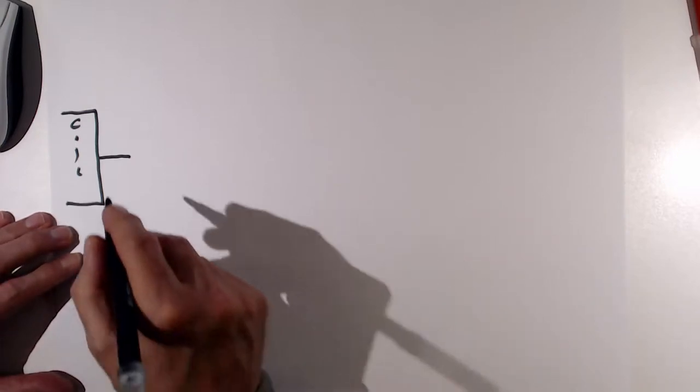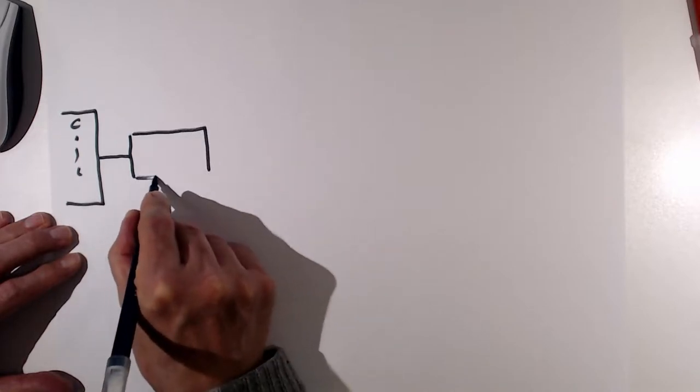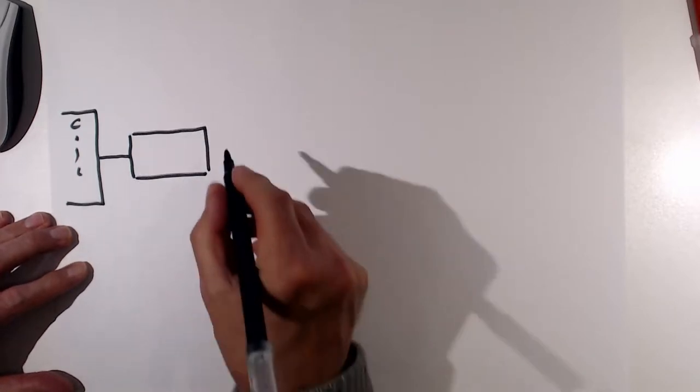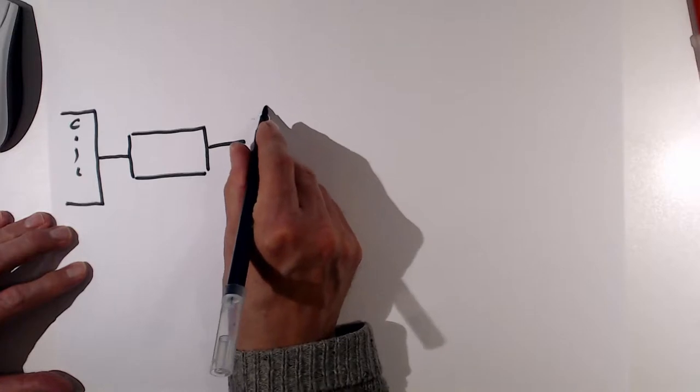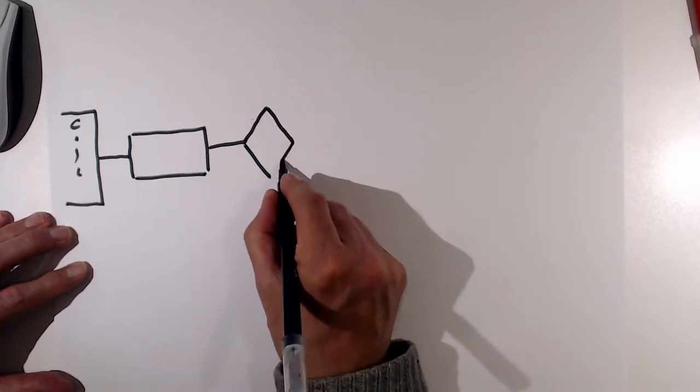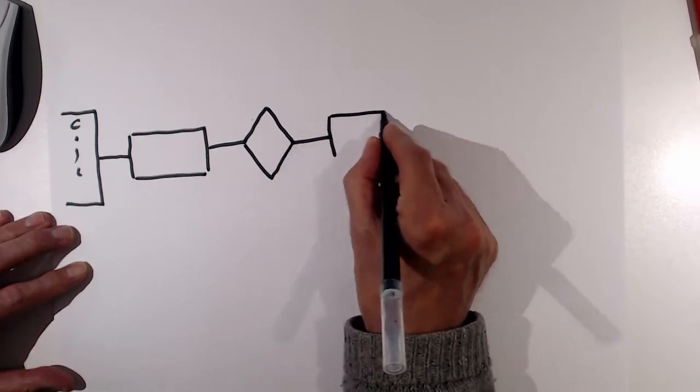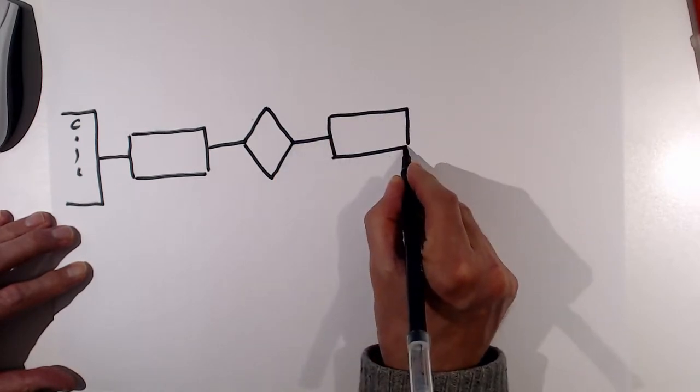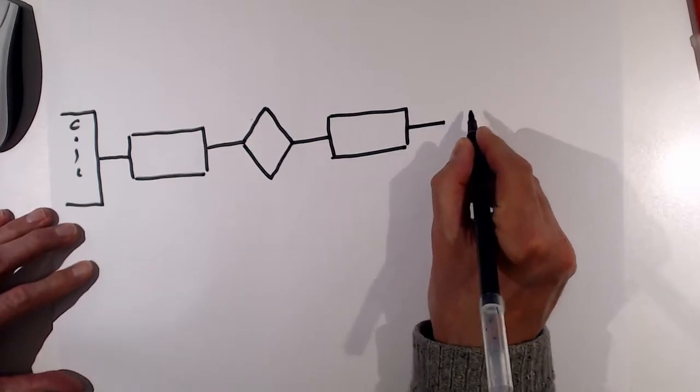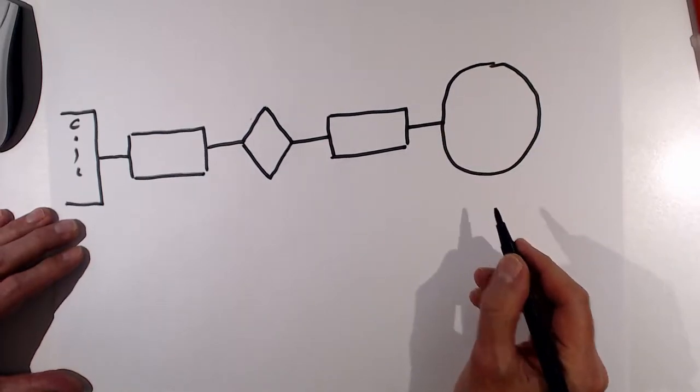For instance, you can have some kind of transformation—let's draw it like a rectangle. You can do some kind of filtering—let's draw that as a diamond—and also other transformations if you want to. Typically, at the end you will have some kind of collecting operation. Let's draw that as a big circle because that's